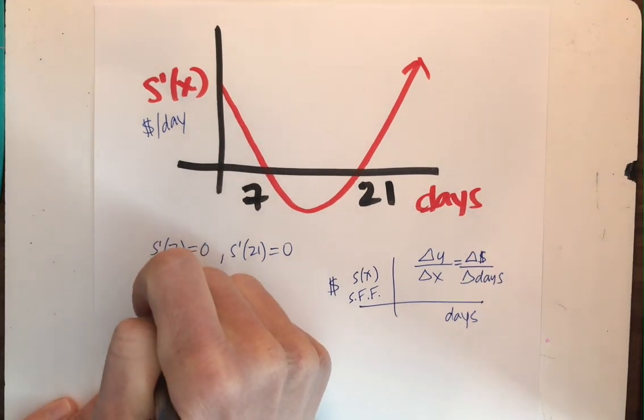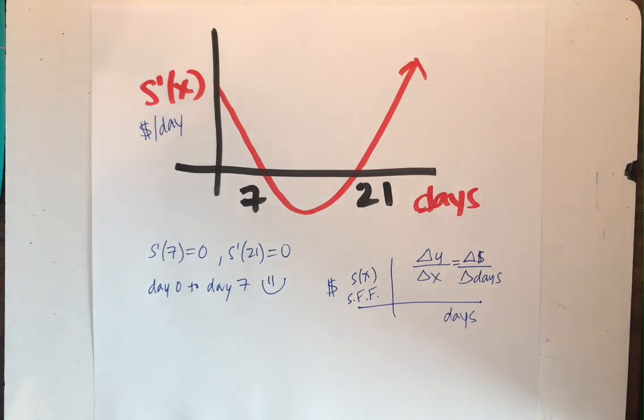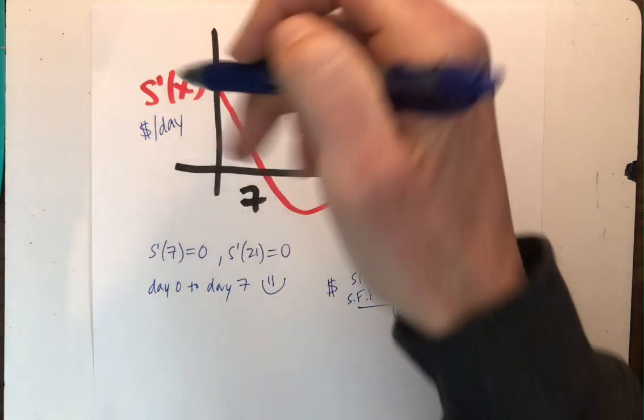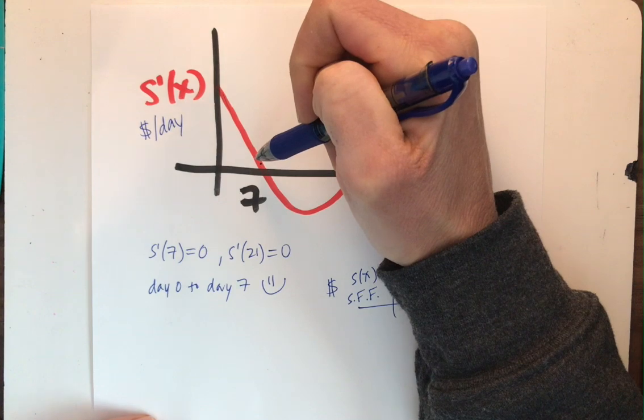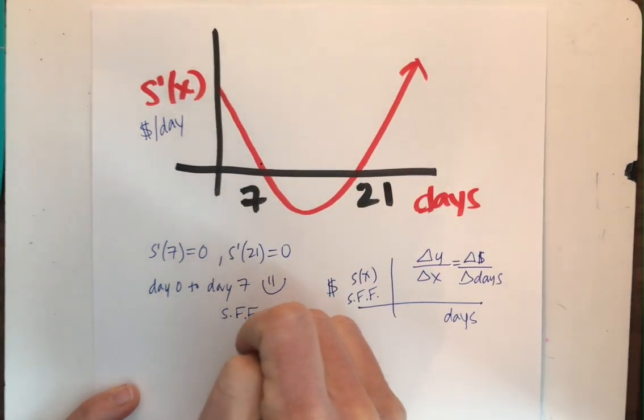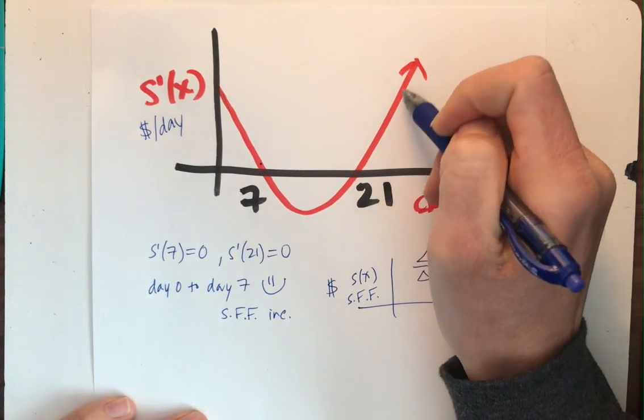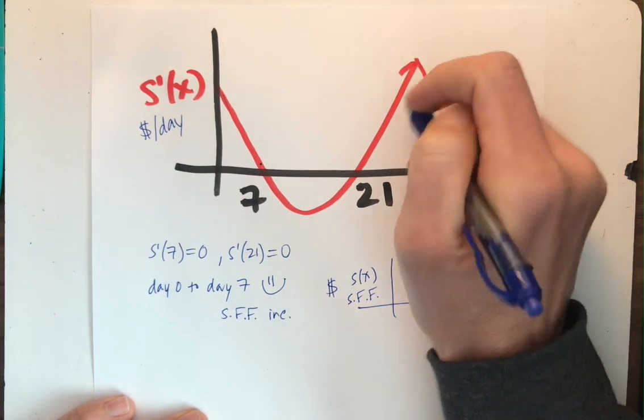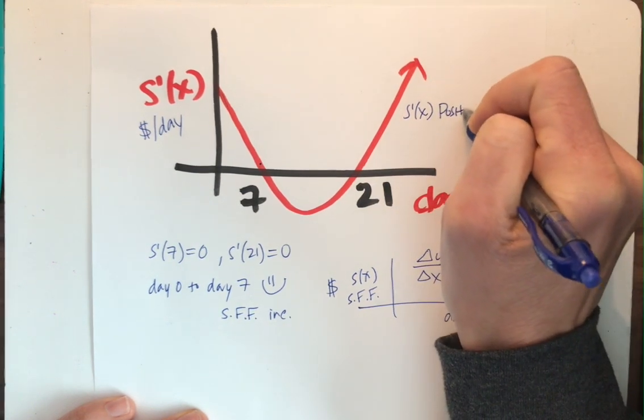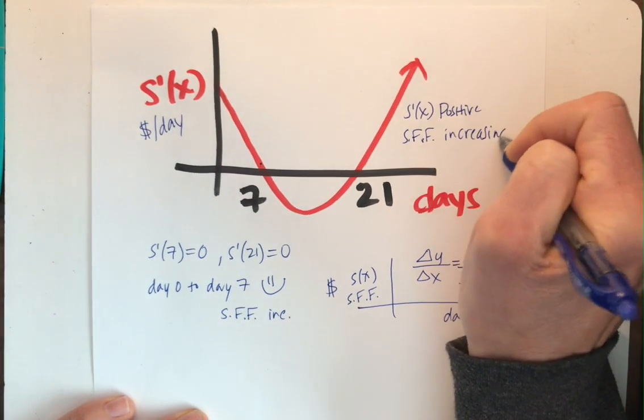Now from day 0 to day 7, the Sarah Fisher fund is very happy. Why is it happy? Well, S prime of X is positive. And if S prime of X is positive, that means S of X is increasing. So the Sarah Fisher fund is increasing. So given that, what other days is Sarah Fisher very happy? Well, I'm going to be really happy on these days after the 21st day when S prime of X is positive and the Sarah Fisher fund is increasing again. S prime of X here is positive. So the Sarah Fisher fund is increasing, meaning I'm very happy.